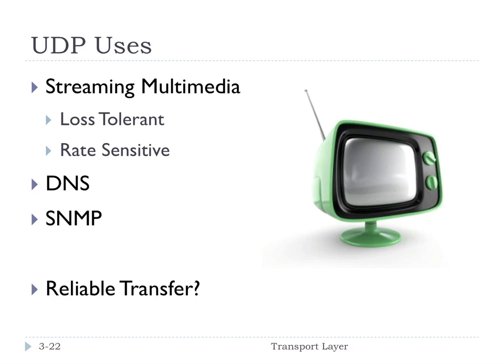UDP is used in things like streaming multimedia, since that is very loss-tolerant — it's okay to lose a few packets and it still looks or sounds good enough. Streaming multimedia is also very rate-sensitive, meaning you've got to make sure you can send fast enough. DNS also uses UDP because it's important to get a quick response with the IP address, and it's better to be fast and possibly lose a packet and retry than to set up a full TCP connection every time. Other protocols like SNMP, a network management protocol, also use UDP.